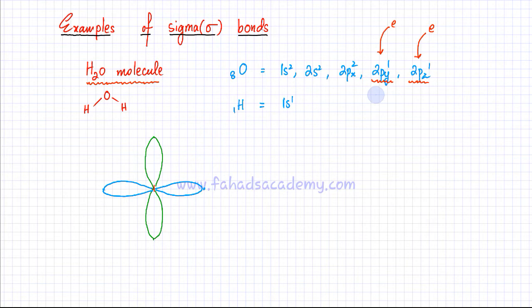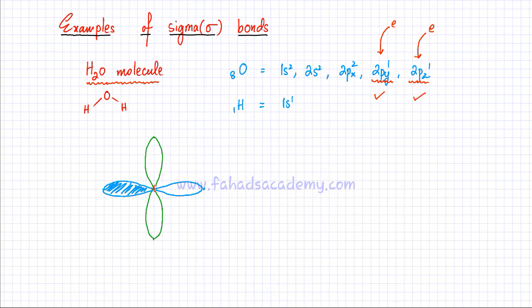So these are the orbitals that would be taking part in forming a sigma covalent bond. I've drawn an oxygen atom here and I've ignored all the other orbitals which are full — I'm only looking at the half-filled orbitals. The blue orbital here, the oxygen nucleus is right at the center, and that blue orbital is going to be the 2py orbital.